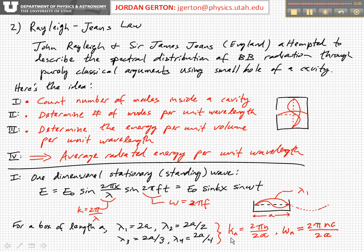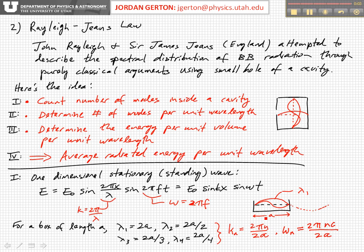These indexed wave number values K_N and angular frequency values ω_N tell you what possible standing waves will fit into a box of length A when the sides of the box are metal — meaning the electromagnetic field must be zero at the edges. In principle, for this one-dimensional box, we can count up all the possible modes in a particular frequency range.